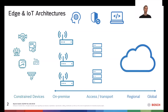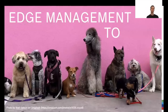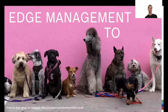When looking at these architectures and all these devices, you might end up with a situation like a wolf pack — really heterogeneous devices where you're not sure how they interact. Basically, edge management means going from that situation to one where you still have heterogeneous devices, but they all behave well and have a common interface through which you can interact with them.